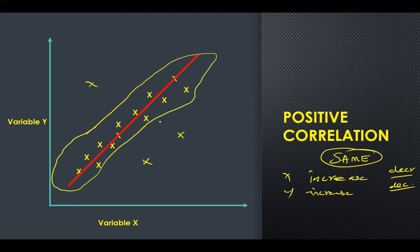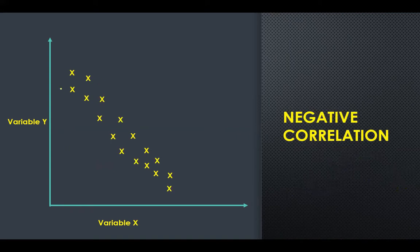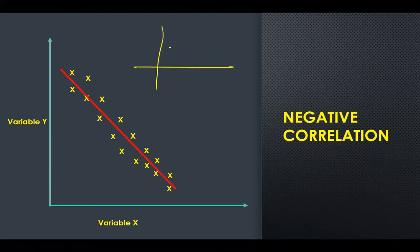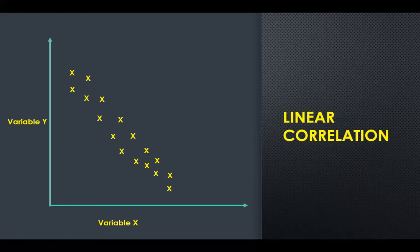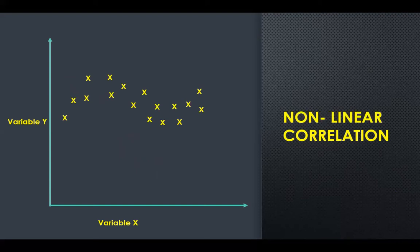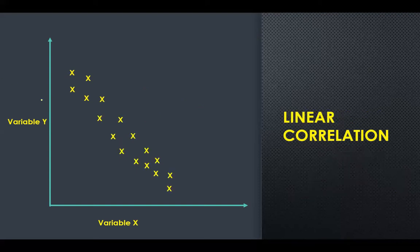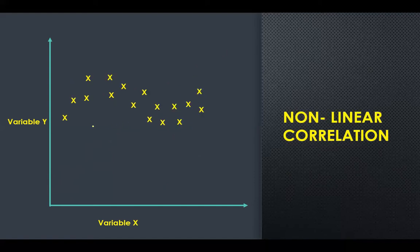For negative correlation, x increases while y decreases — opposite directions — so the straight line goes from top-left to bottom-right. If there is no increase or decrease and the points form a flat horizontal line, that is called no correlation. When the points form a straight line in any direction, that is linear correlation; when they form a curve, that is non-linear or curvilinear correlation.